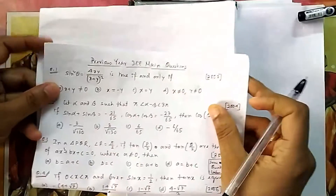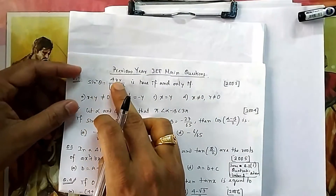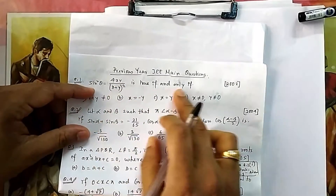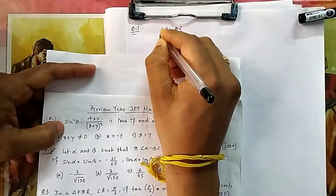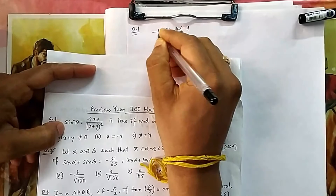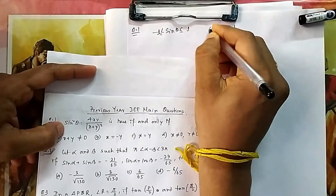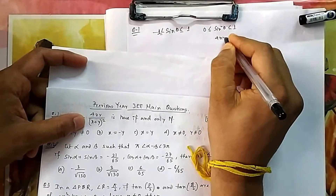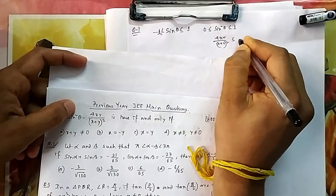In question number 1, it is given that sin²θ = 4xy/(x+y)², and it is true if and only if... We know that sin θ varies between -1 to 1, so sin²θ is always positive and varies between 0 to 1. That means 4xy/(x+y)² should be less than or equal to 1.